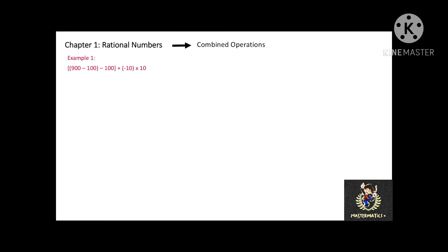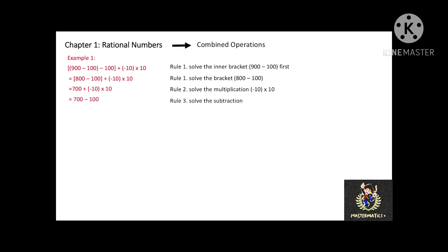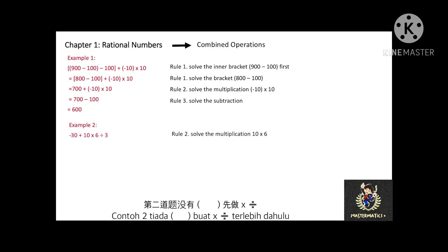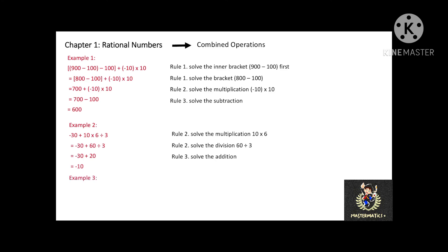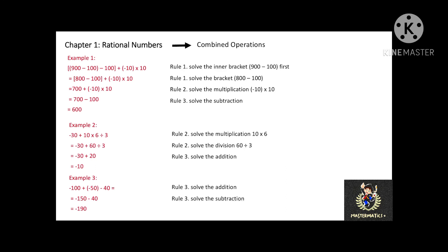Look at the first example. There is an inner bracket inside a big bracket. Therefore, you have to solve the inner bracket first, followed by the outer bracket, then multiplication, and last the subtraction. For the second example, there are no brackets in the operation, so you will do the multiplication, followed by division, and last addition. For the last example, there are no brackets, no multiplication, no division. Therefore, you just have to do addition and subtraction.